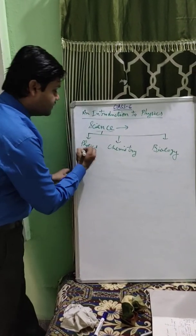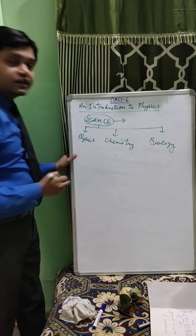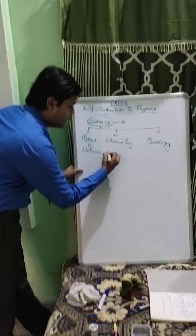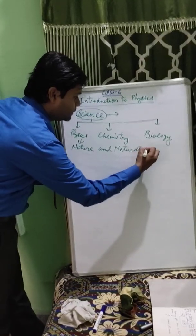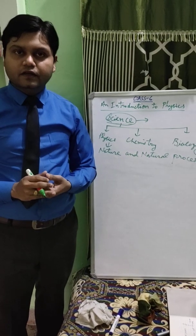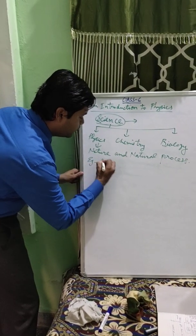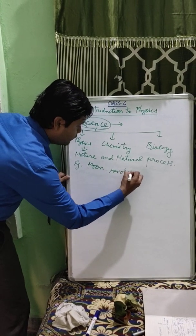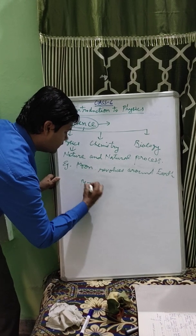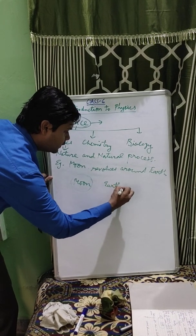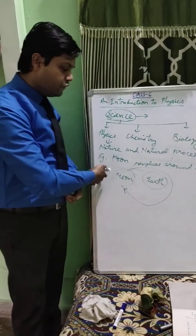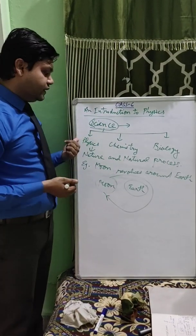What is Physics? Physics is the branch of Science which deals with the study of Nature and Natural Phenomena — Natural Processes, we can say. For example, Moon is revolving around the Earth. This is the Moon and this is our planet Earth. It is making one rotation every 24 hours. So, if we are studying about the Moon and Earth, then it will come in the category of Physics.